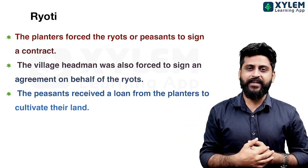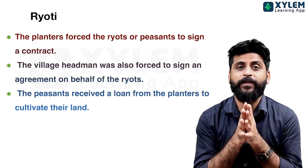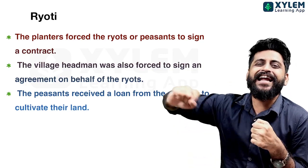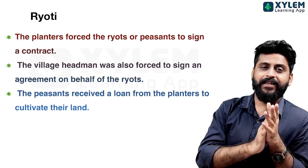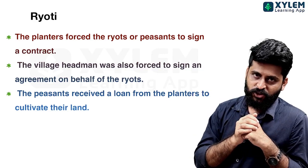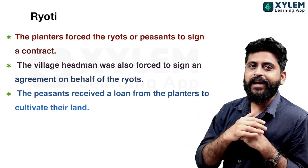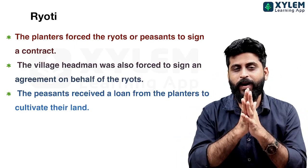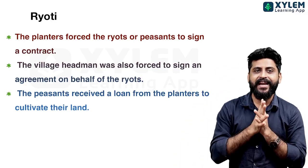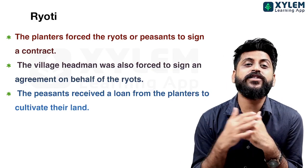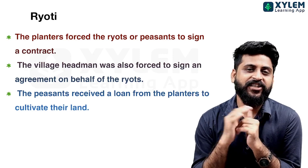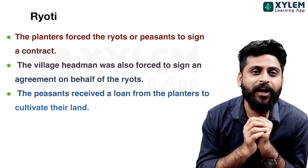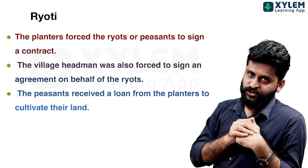The second type is Raiyati Cultivation. The planter would sign an agreement or contract for a fixed time period. He would sign the agreement on behalf of the village headman. The village headman was also forced to sign the agreement on behalf of the rights of the peasants. The village headman, the gramathalawar, would sign the agreement.